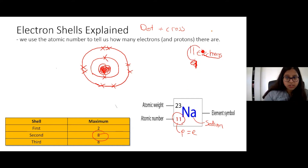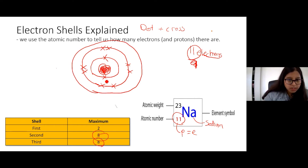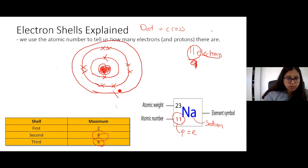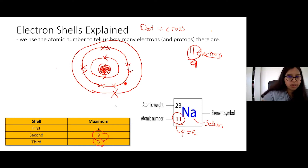We've placed ten electrons so far but remember there are 11 in total, so we open up the third shell, which can also hold a maximum of eight. We place one more electron there. That's how you do it. You may not need this at your current level, but in future years you'll need to know how to draw these diagrams.